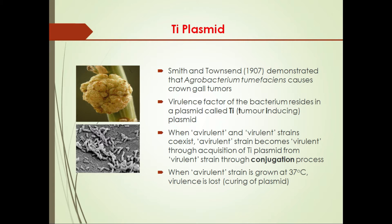However, when this avirulent strain is grown at 37 degrees Celsius, virulence is lost — meaning the plasmid is lost. We also learned this in the previous class: curing of a plasmid means to get rid of the plasmid without affecting the viability of the bacterium. So growing bacteria at high temperature, which does not affect viability, can cure the bacteria of plasmids.